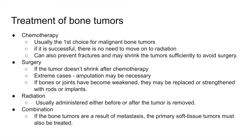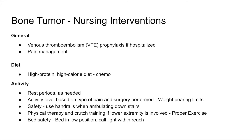For treatment of bone tumors, chemotherapy is usually the first choice for malignant tumors. It can prevent fractures and may shrink the tumor significantly to avoid surgery. If the tumor can't be shrunk after chemotherapy, surgery might be required, and in extreme cases amputation may be necessary. If bones or joints have become weakened, they can be replaced or strengthened with rods or implants. Radiation is usually administered before or after tumor removal, or as a combination. If bone tumors result from metastasis, the primary soft tissue tumors must also be treated.